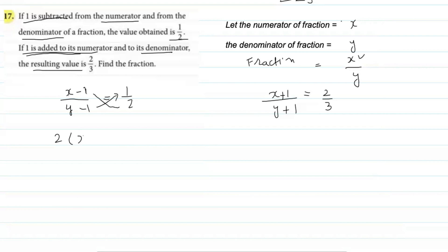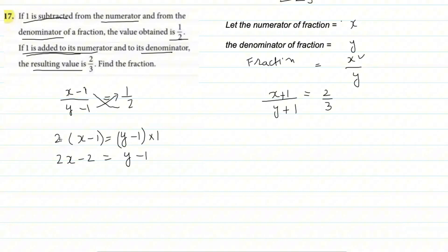Cross multiplying equation one: the denominator on the right side multiplies the numerator on the left: 2(x−1). The denominator on the left multiplies the numerator on the right: (y−1) × 1. So: 2(x−1) = (y−1), which gives 2x − 2 = y − 1.